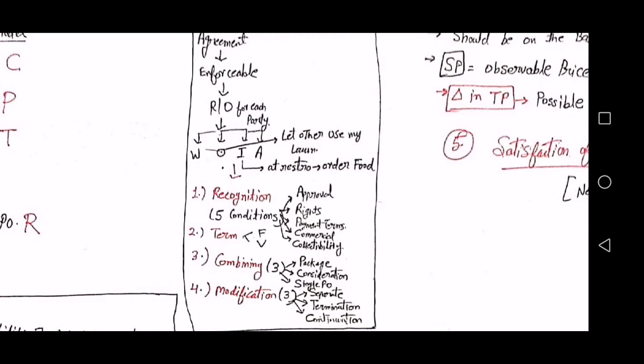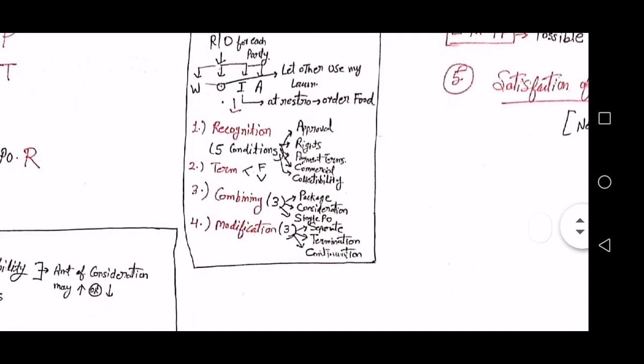Written contracts are on paper. An example of an oral contract is if you own a lawn and allow another person to use it. An implied contract example is when you go to a restaurant and order food. Any other customary practice that is traditionally accepted to be a contract can also be recognized as a contract.